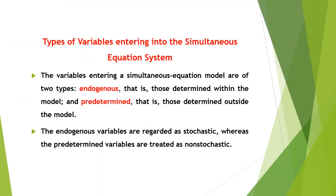Before looking at the identification problem, we need to understand the types of variables entering into the simultaneous equation model and the types of equations used. The variables entering into the simultaneous equation model are of two types: endogenous variables and predetermined variables. Endogenous variables are those whose values are determined within the model, whereas predetermined variables are those whose values are determined outside the model. Endogenous variables are regarded as stochastic, while predetermined variables are non-stochastic.